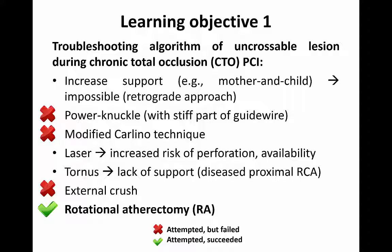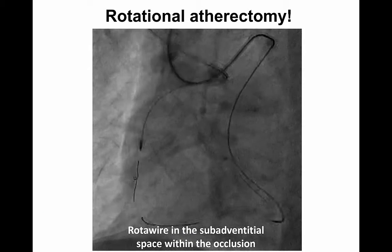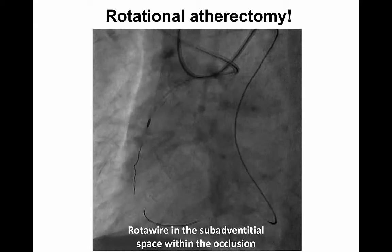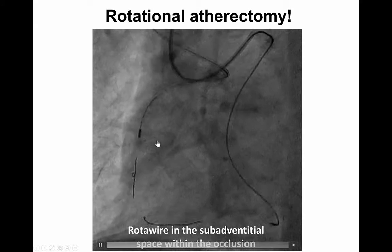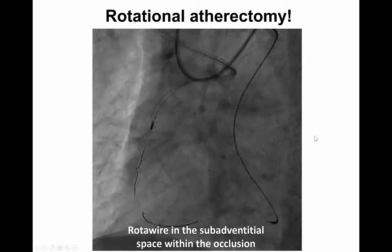We were left with laser, but this has the problem of availability in many cath labs, and we were also concerned about the increased risk of perforation in this setting. We also considered Tornus, but given the problem of support due to the diseased proximal RCA, we evaluated that this wouldn't work, and so we proceeded with rotational atherectomy. This video shows the rotowire in the subadventitial space within the vessel architecture, and rotational atherectomy being performed in the subadventitial space. You can see the rotowire overcoming the spot of focal resistance previously encountered.